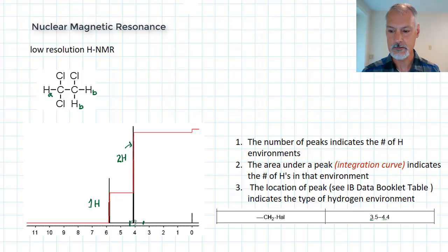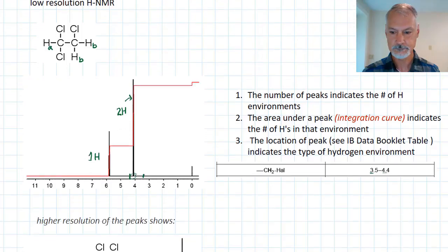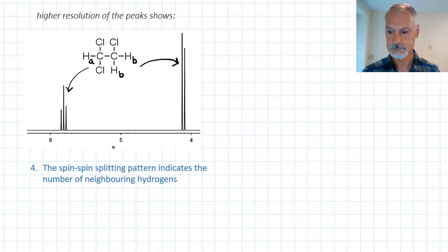Now, today we're going to look a little bit more at something called higher resolution NMR data. So what we do now is we zoom in on these peaks that we have and take a closer look at what's generating them. So a closer look at those two peaks indicates that the taller peak generated by the hydrogens in what I call the B environment actually exists as two peaks and that the hydrogen A actually exists as three smaller peaks. This splitting pattern is used to give us information about the number of neighboring hydrogens.